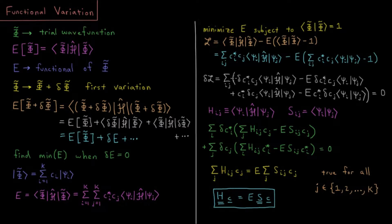Once we do that and simplify our terms, we note that we have delta c_i star in both cases. So we have delta c_i star sum over j H_ij c_j minus E S_ij c_j. And similarly, factoring the bottom in a similar way, I get sum over j delta c_j sum over i H_ij c_i star minus E S_ij c_i star.